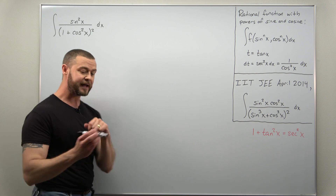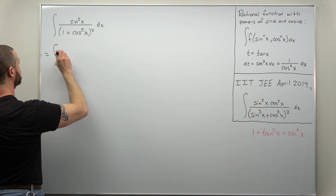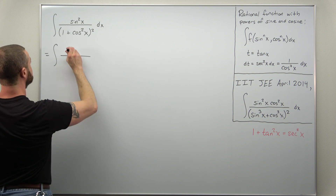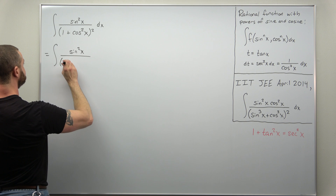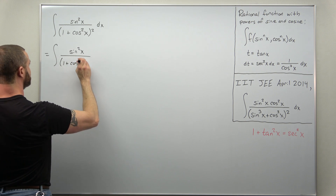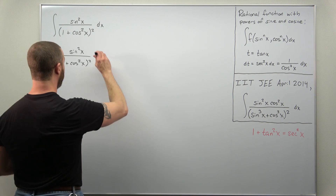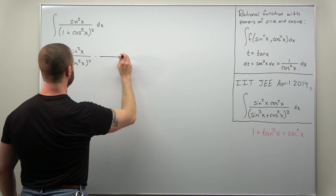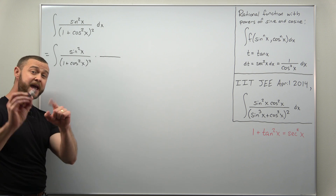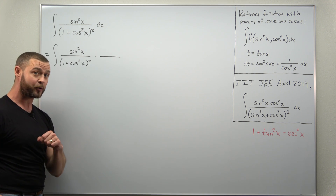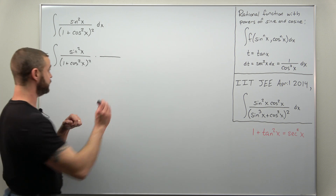So let's go ahead and write that down. We write our original integral: sine squared x divided by one plus cosine squared of x, all squared. We're going to multiply by one, and since our denominator behaves like cosine to the fourth power of x, we're going to try to cancel that out to make use of our substitution.